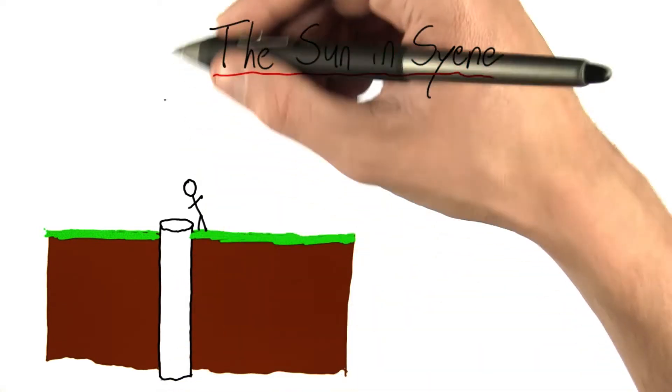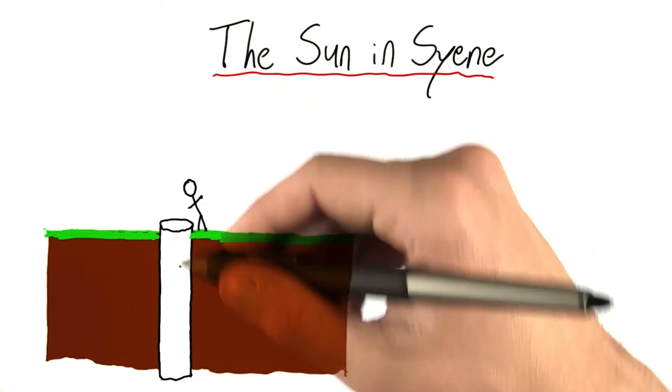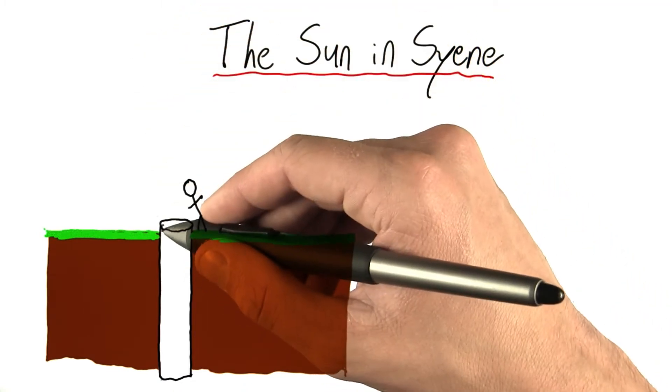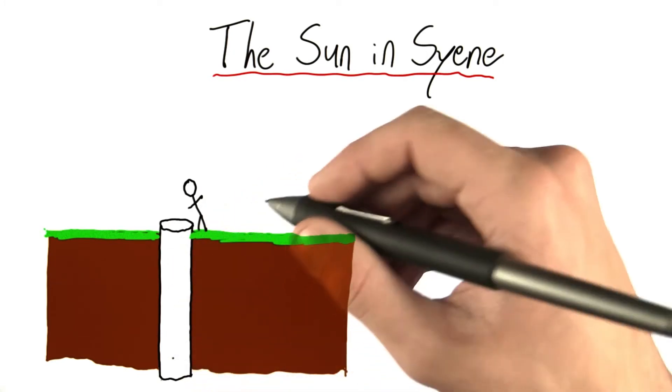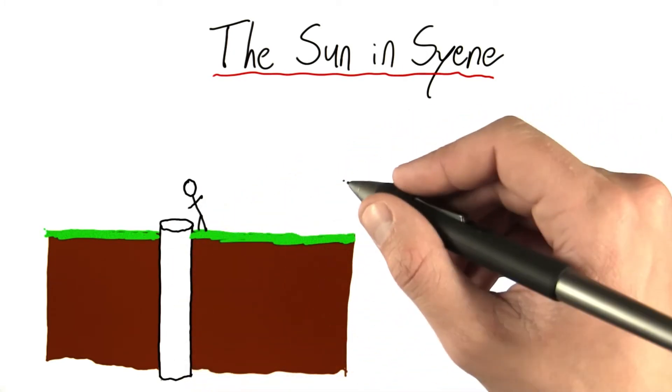What this meant was that the sun's rays must have been striking in such a way that a ray which entered the top of the well could make it all the way to the bottom. And so his conclusion was that the sun's rays are striking vertically.